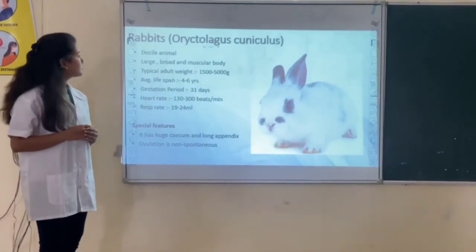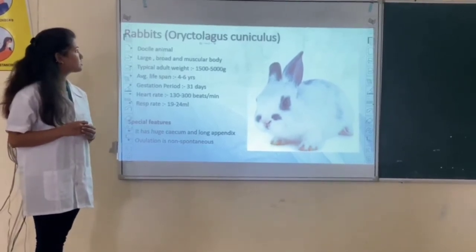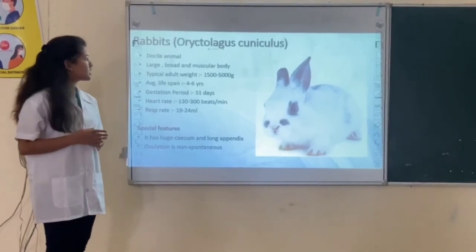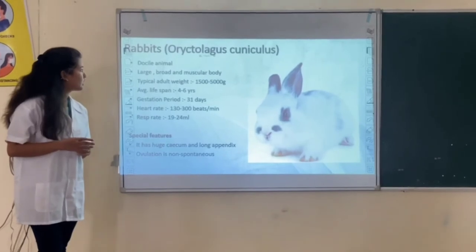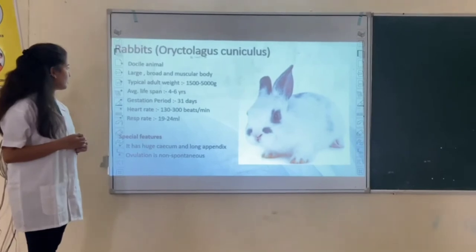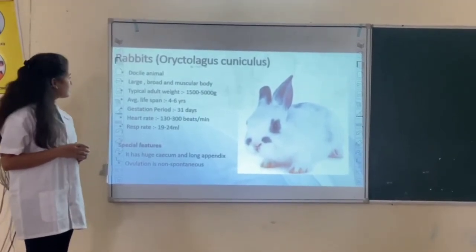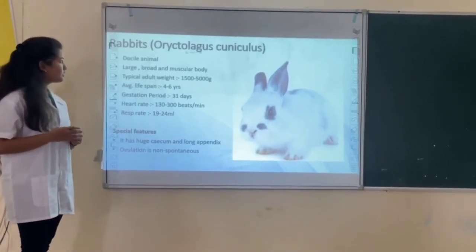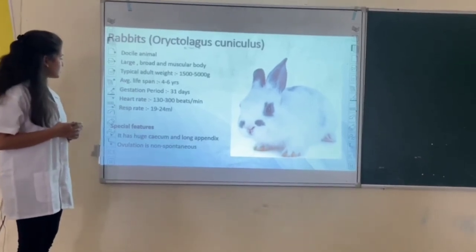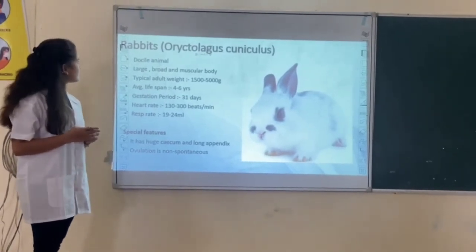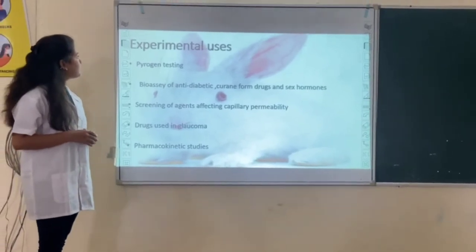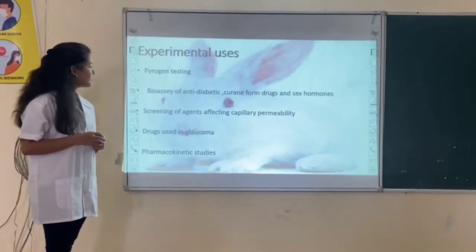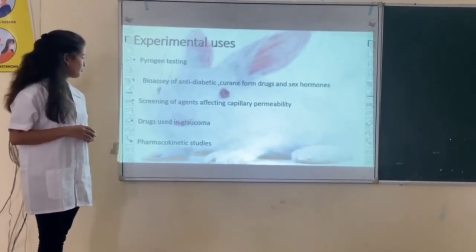The next animal is rabbit. It is a small animal which is easy to handle. It has a large, broad, and muscular body. Typical adult weight of rabbit is 1500 to 5000 grams. Average lifespan is 4 to 6 years. Gestation period is 31 days. Heart rate is 130 to 300 beats per minute. Special feature: rabbit has a huge cecum and long appendix, and ovulation in rabbit is non-continuous. Experimental uses of rabbit include pyrogen testing, bioassay of antibiotics and sex hormones, screening of measures affecting capillary permeability, drugs used in glaucoma, and pharmacokinetic studies.